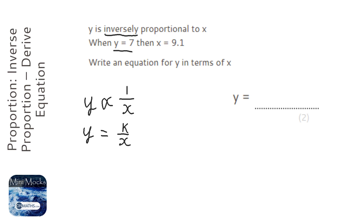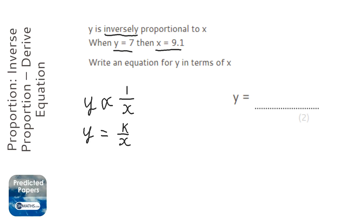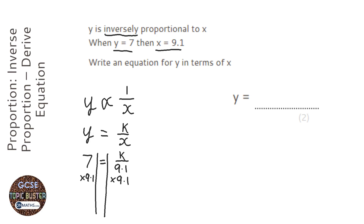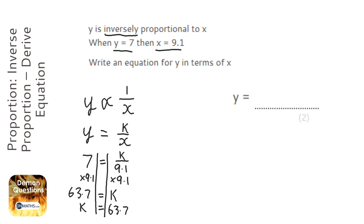We're given a value of y and a value of x, so we're going to use that to work out what k is. K stands for constant — even though constant starts with c — and k won't change, so once we find it, it stays that way. Y is 7 when x is 9.1, so I'll draw my lines in and multiply both sides by 9.1. On the calculator, 7 times 9.1 gives 63.7, so k equals 63.7.